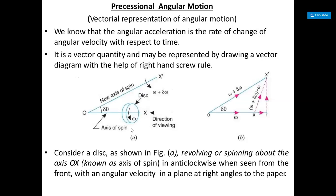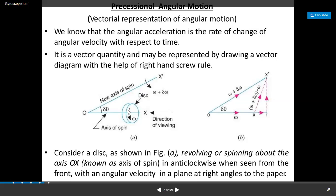The axis of spin, axis of gyroscopic couple, and axis of precession — all three axes — can be evaluated with the help of the right-hand screw rule. Suppose we are taking a disc which is moving along the x-axis, so the axis of spin is the x-axis.